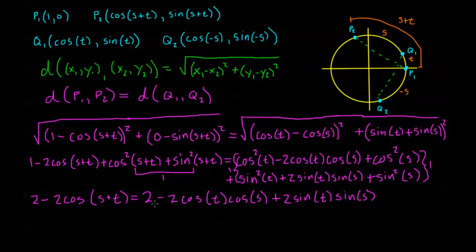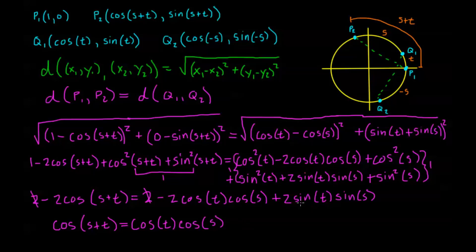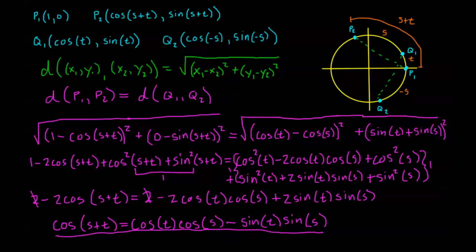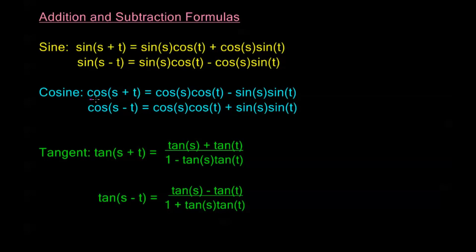We cancel the 2 on both sides, then divide both sides by negative 2. This gives us cosine of s plus t equals cosine t cosine s minus sine t sine s. That's exactly our addition formula for cosine.